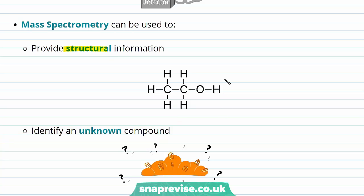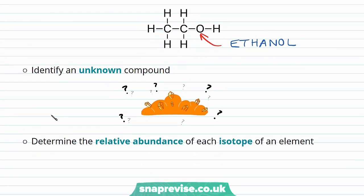So for example, if we look at this molecule which we know is ethanol, our mass spectra will be able to provide us with information about the different parts of this compound. The mass spectra can indeed therefore be used to identify unknown compounds.